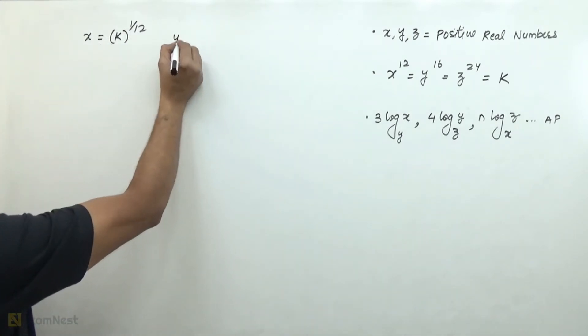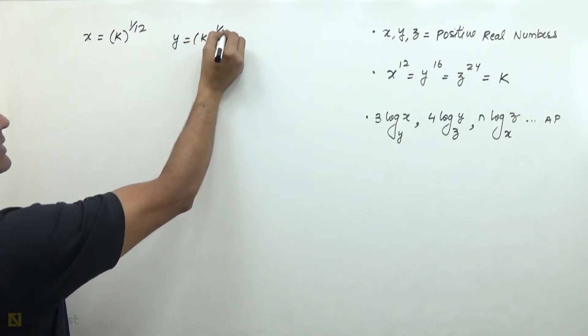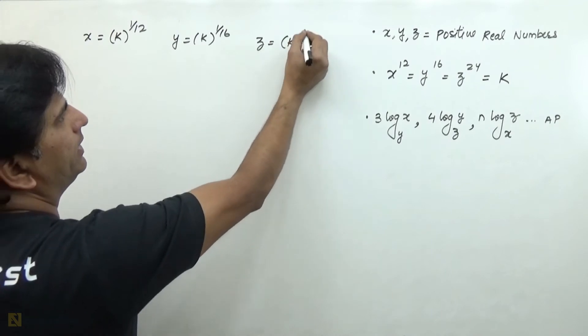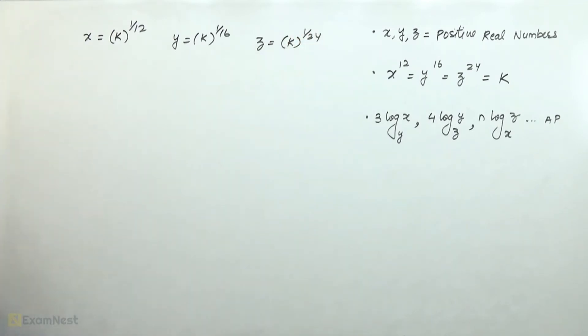What about y? So y is k raised to the power of 1 over 16, and z is k raised to the power of 1 over 24.